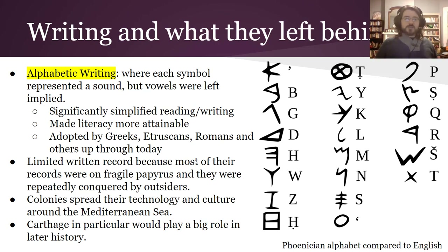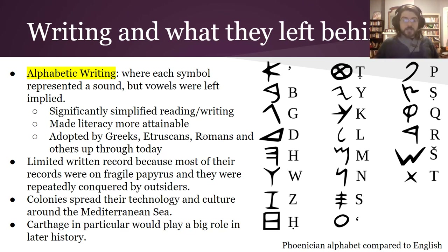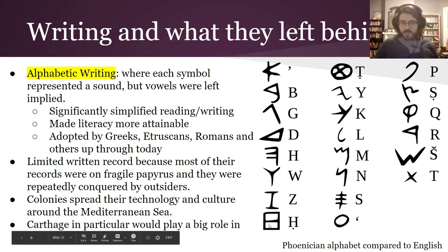The last reason we really know the Phoenicians is because of the writing system they invented — perhaps the most lasting feature. They came up with alphabetic writing, where each symbol represents a sound. They left the vowels implied, but later alphabetic systems would add those. This significantly simplified reading and writing: instead of memorizing hundreds of different symbols, you only had to memorize a couple dozen. It made literacy so much more attainable — possible for way more people, taking way less time. It was adopted by lots of different groups up through today. You can even see some of the similar features of these letters to the ones we use — look at that M, that N, the H.